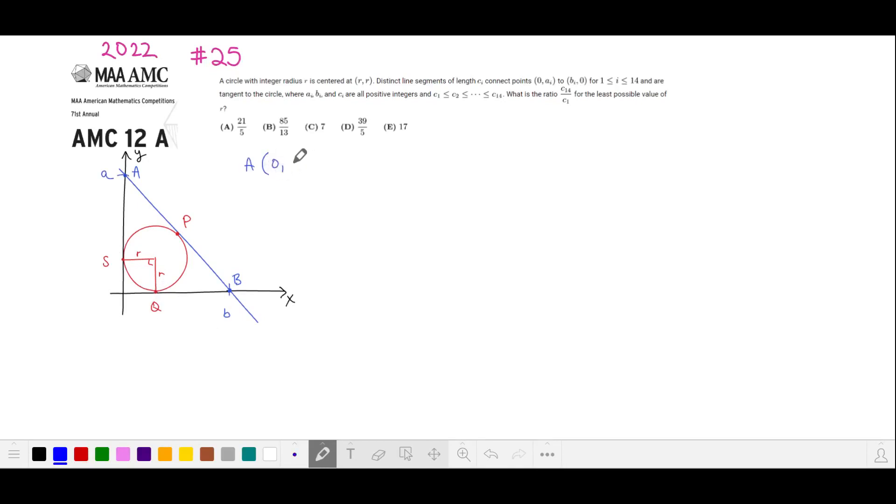Point A has coordinates 0, lowercase a. B is at lowercase b, 0. Q has X coordinate R, the radius of the circle, and the Y coordinate of S is also the radius of the circle.